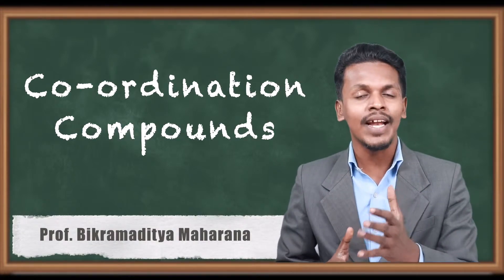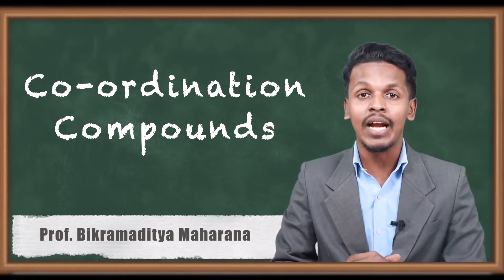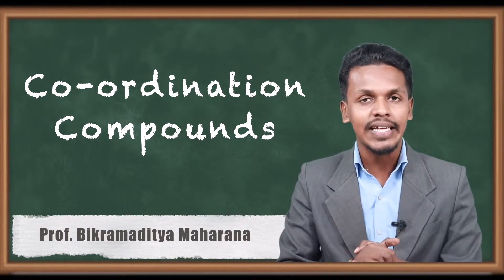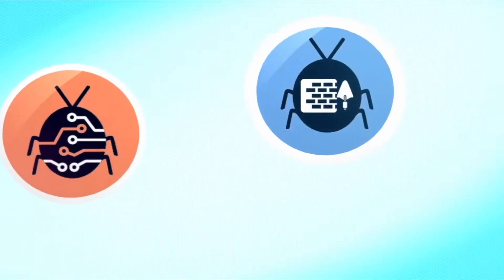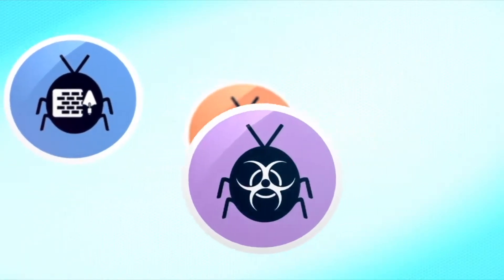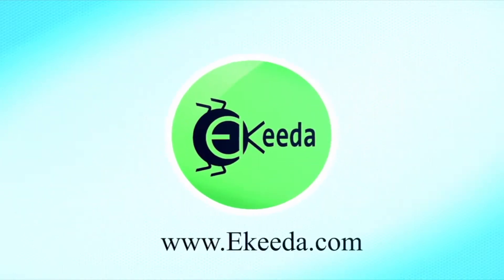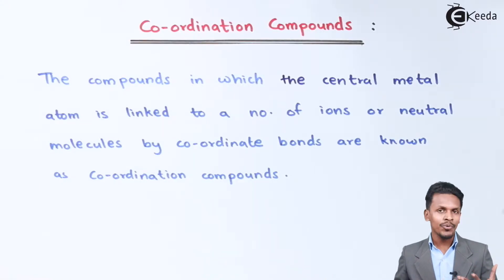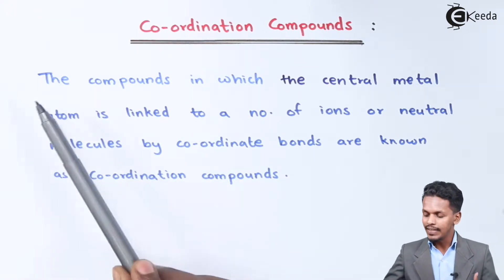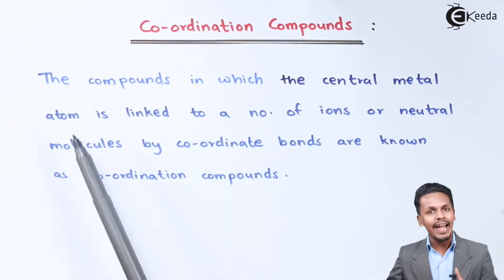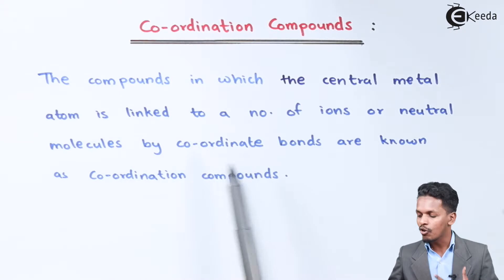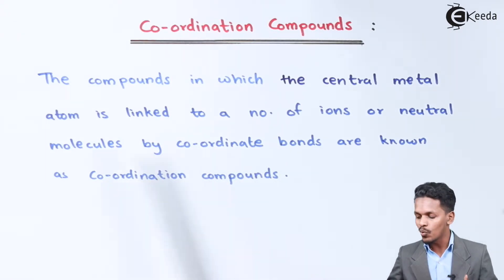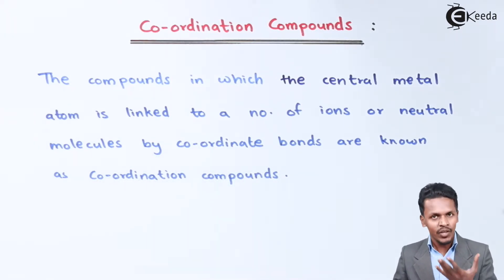We are studying a new chapter — coordination compounds. Let us understand what coordination compounds are and what bonds are involved. The definition: coordination compounds are compounds in which the central metal atom is linked to a number of ions or neutral molecules by coordinate bonds.